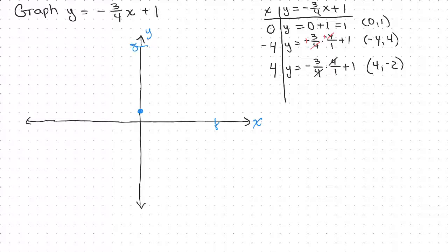We have (0, 1) right here, that's the first ordered pair. Then we've got (-4, 4): 1, 2, 3, 4. There's (-4, 4). And the last one is (4, -2): over 4, down 2. Those all lie in a straight line, so that's probably correct. If one of them is off, that means you made a mistake on at least one of them. And there's our line.